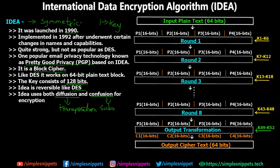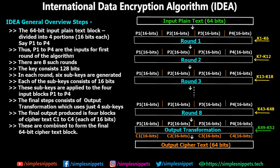Now let's see the overall process — what is exactly happening in the IDEA algorithm. On the right-hand side you have an overview diagram of the entire process, and on the left-hand side you have the theory with the step-by-step process. The 64-bit input plain text is divided into 4 portions of 16 bits each. As you can see, there are basically 8 rounds. So first we divide the 64-bit input into 4 blocks of 16 bits — P1 to P4.